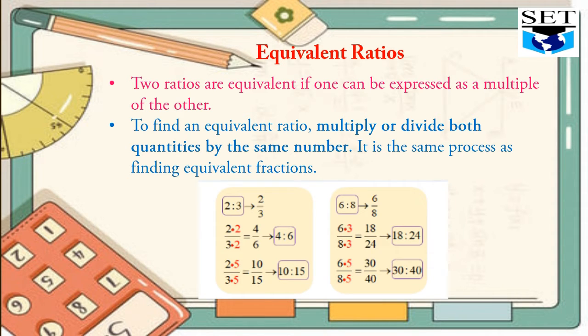For example, here you can see a ratio is given 2 is to 3, or we can write it as 2/3. How can we find the equivalent ratio of 2/3 by multiplying with the same number? Here 2/3 is multiplied by 2. 2 times 2 is 4 and 3 times 2 is 6. So the equivalent ratio of 2/3 is 4 to 6.